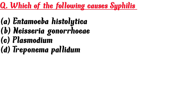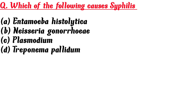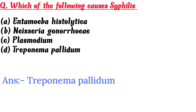Which of the following causes syphilis? A. Entamoeba histolytica, B. Neisseria gonorrhea, C. Plasmodium, D. Treponema pallidum. Answer is D. Treponema pallidum.